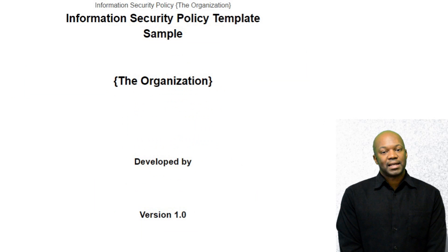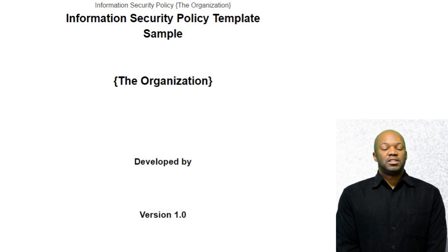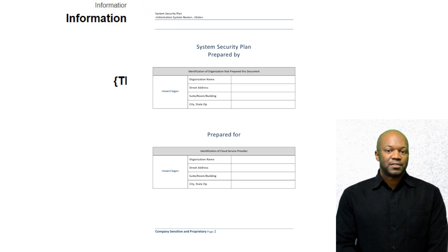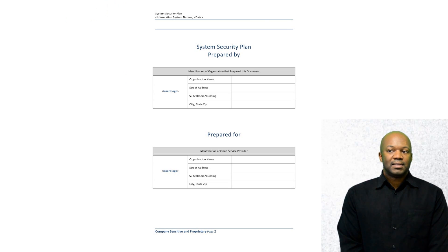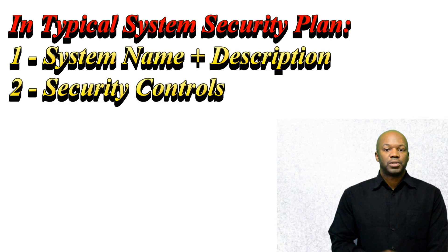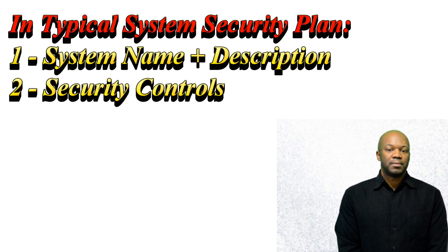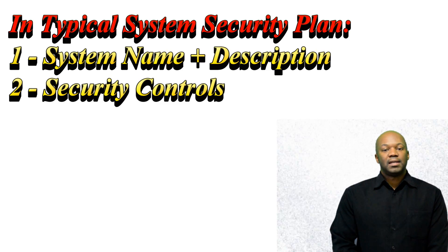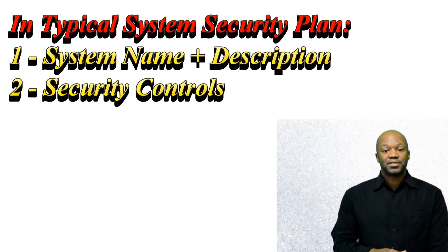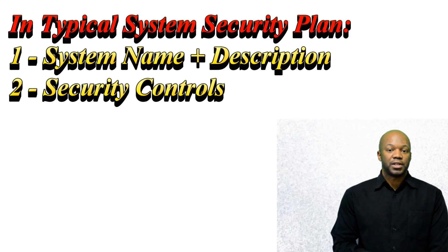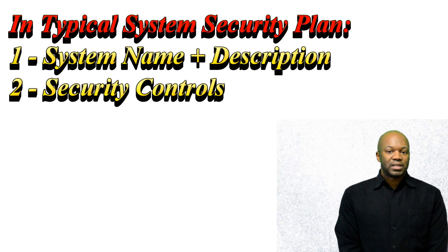There are lots of different ways to actually do the documentation, and there are different formats of the system security plan. But no matter what format the system security plan takes, it always has some of the main ingredients, such as a description of the system, a title of the system, and then a breakdown of all the security controls showing how the system meets those particular security controls. That's pretty much what a system security plan is.